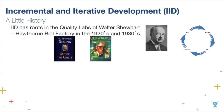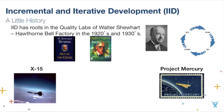Shewhart influenced Mr. Deming and Mr. Juran, and the three of them are really the gurus of the quality movement of the 20th century. The first usage of IID was actually in a hardware project — the development of the X-15 back in 1950, the first manned rocket to break the atmosphere of Earth. It was then used on the first software project in the late 1950s for Project Mercury, the beginning of the space race, where they used a concept we call today extreme programming.